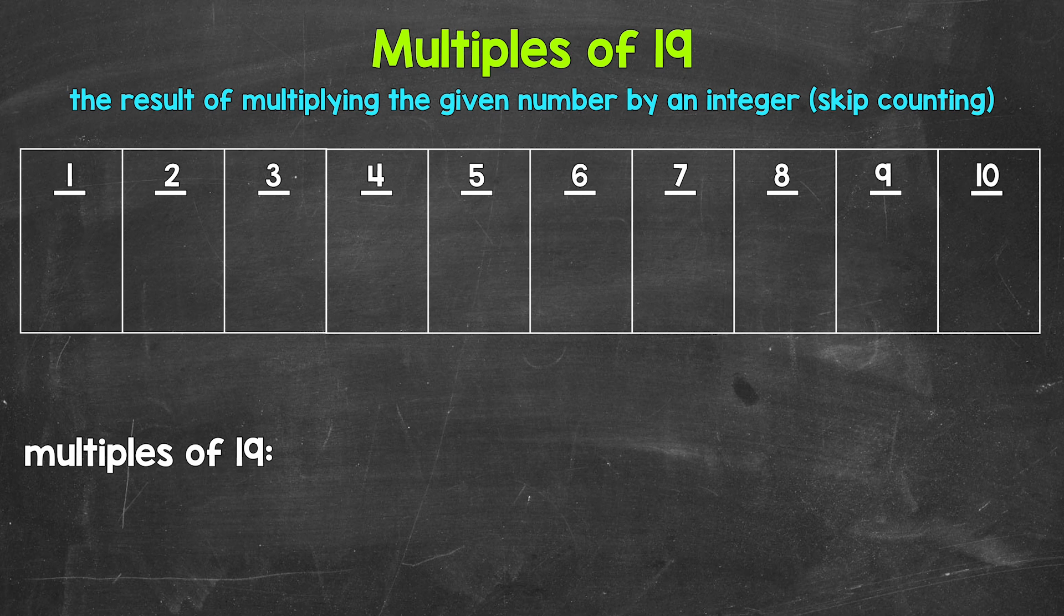So one times 19, two times 19, three times 19, so on and so forth. Another way to think about multiples is to skip count. So all of the numbers something is going to hit when counting up by that number, those are all going to be multiples.